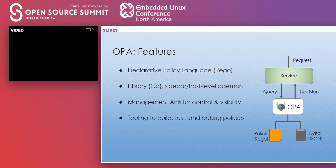OPA has integrations with IDEs like VS Code, and one coming up with IntelliJ, to help you author your policies. So to summarize OPA's features: a declarative language, multiple deployment models, management APIs for control and visibility, and a rich tooling set.